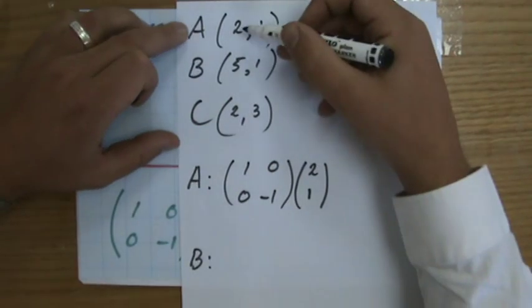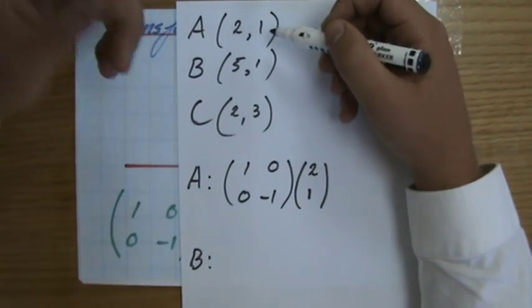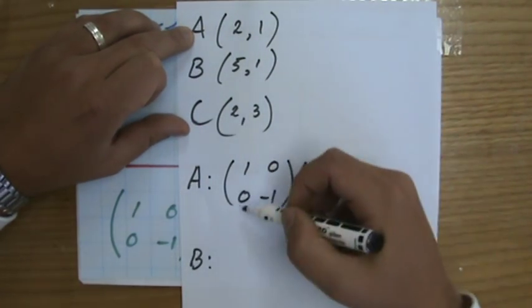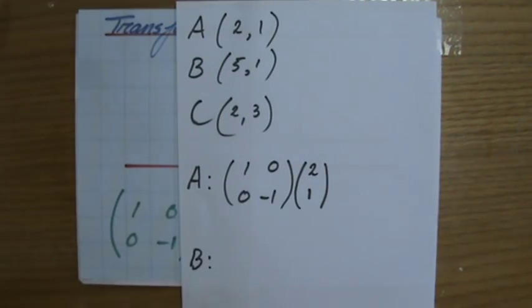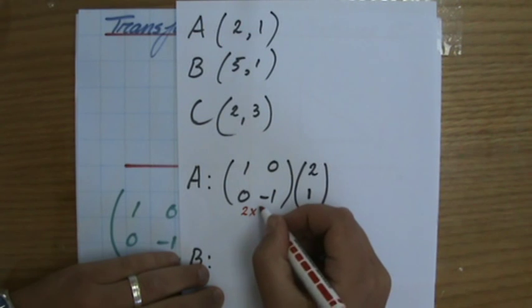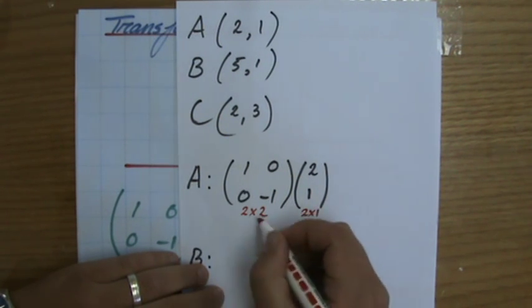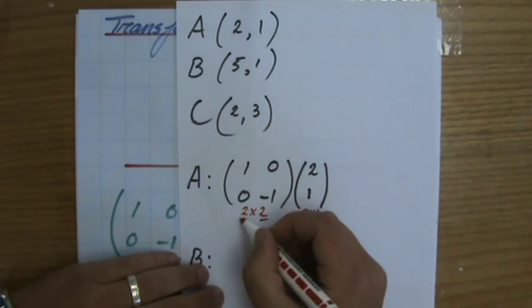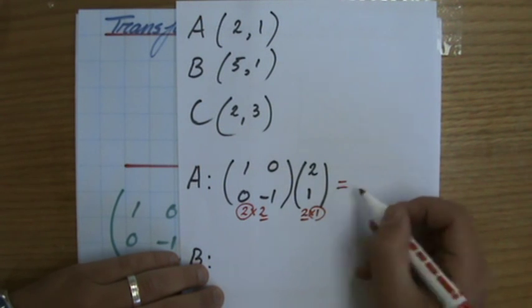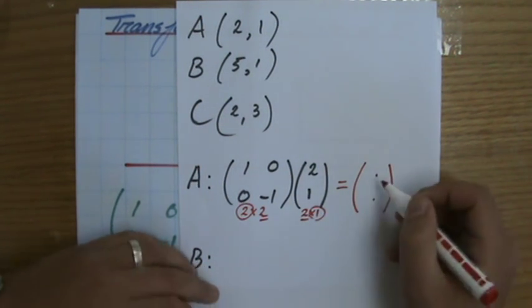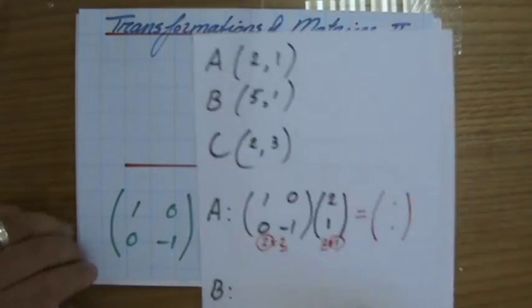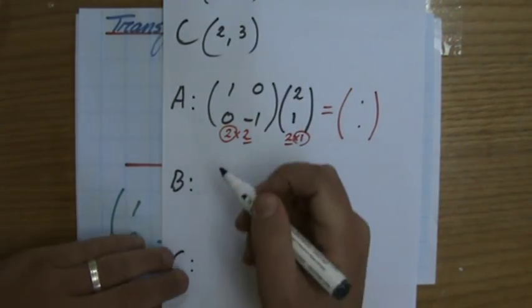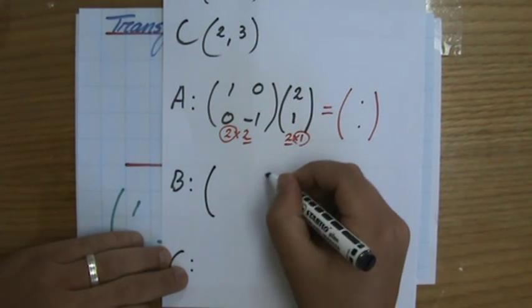First, you write down the matrix, and then you multiply that by the coordinates, but then written as a column vector. So if I'm transforming point A under this matrix, I say 2, 1 like this. And then, as I showed you in my previous video, a 2 by 2 matrix here, a 2 by 1. So yes, I can multiply it, and my output will be of order 2 by 1. So it's going to look like that. And that is going to be my new coordinate of point A, point A apostrophe. And I'm going to do that for the three vertices.